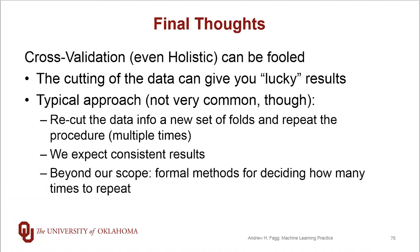An approach — not used very often — is to recut the data multiple times and go through the whole cross-validation process multiple times. We expect to see consistent results, and if we do, then we feel very confident in what we're seeing. There are actually some formal methods for deciding how many times we need to redo the process before we are really sure that we have a good result.